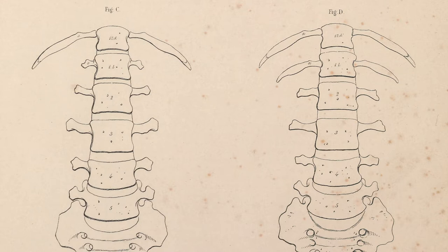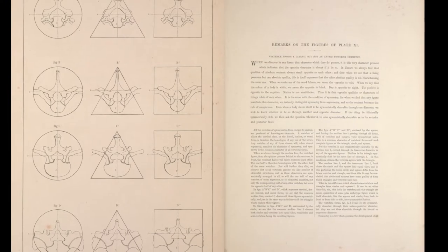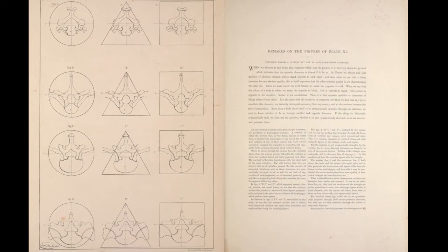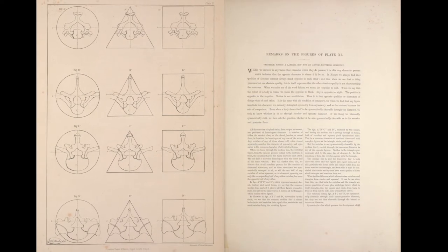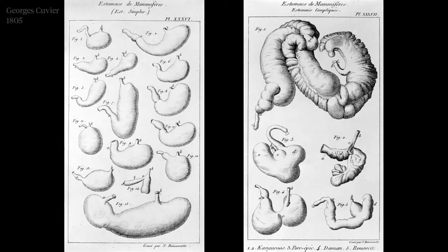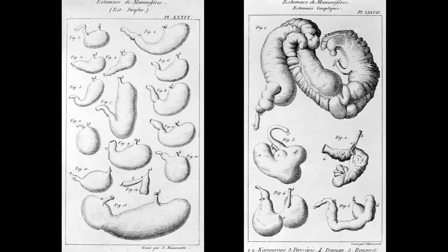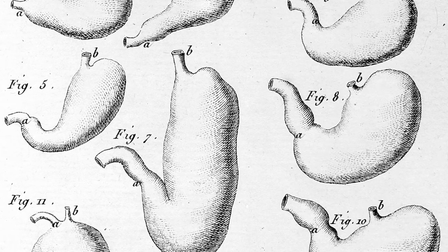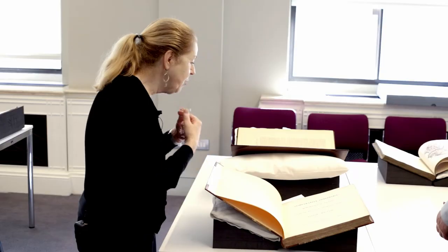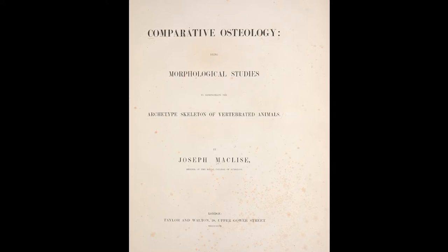This is work that Joseph MacLeese produced three years after his Anatomy of the Arteries — this is on comparative osteology, being morphological studies to demonstrate the archetype skeleton of vertebrated animals, produced by Taylor and Walton in North Gower Street, 1847. One is the whole notion of comparison — he's comparing bones, drawing on well-established comparative anatomy traditions. We might think of someone like Cuvier in France, who claimed that from a fragment of bone he could reconstruct the whole animal. The idea is laying out the whole of created nature, not at all with an evolutionary mindset, and we know that because he uses the notion of archetype, very characteristic of comparative anatomy of the early 19th century.